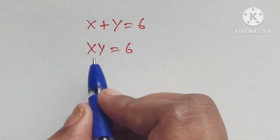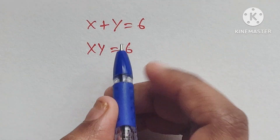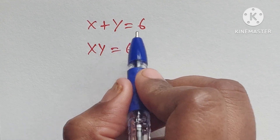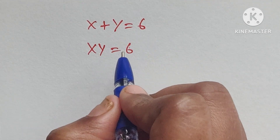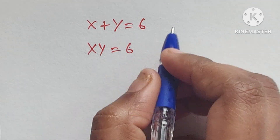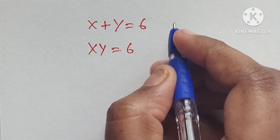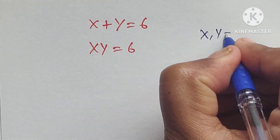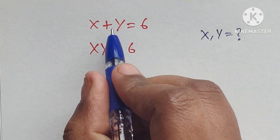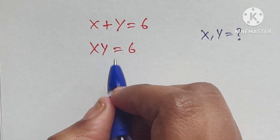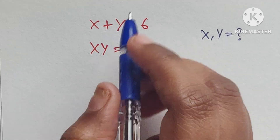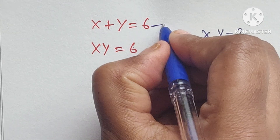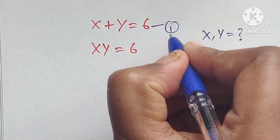Hello everyone, welcome back to our channel. Here we have one problem: x plus y equals 6, and x times y equals 6. In this problem we have to find the x and y values from these equations. Let us consider this is equation 1 and this is equation 2.